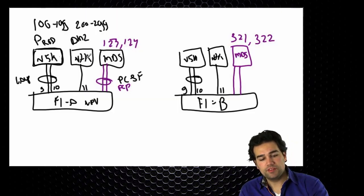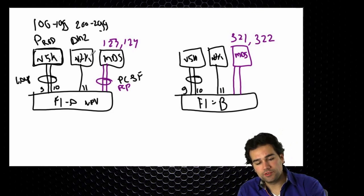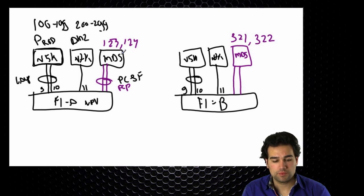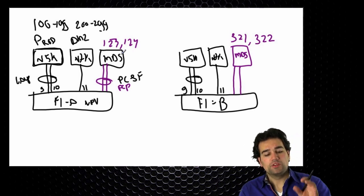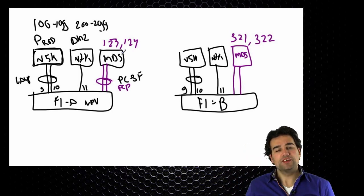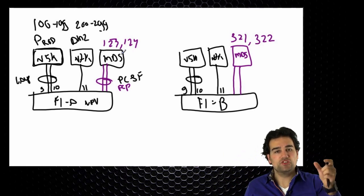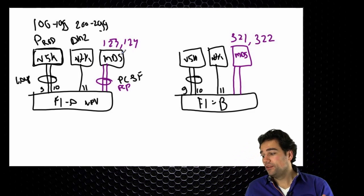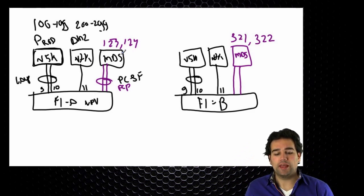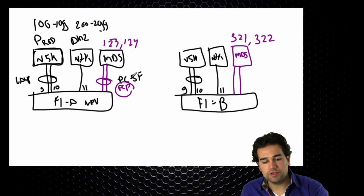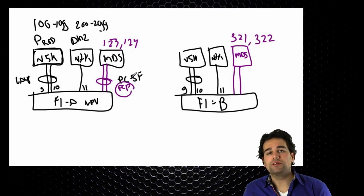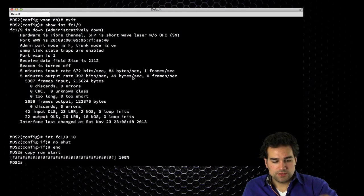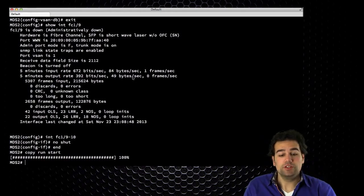That is my upstream configuration complete. I configured the N5K and N7K, and configured my MDS on both Fabric A and Fabric B. On the Ethernet side: ensuring port type edge is configured and allowed VLAN lists are correct. On the fiber channel side: PCP protocol configured, VSANs configured, and NPIV enabled. Now we move into the UCS manager.